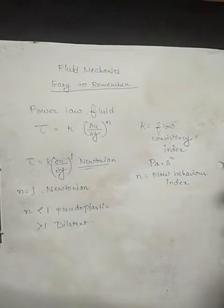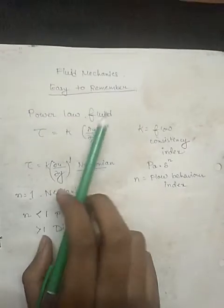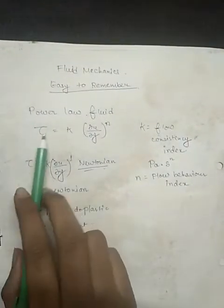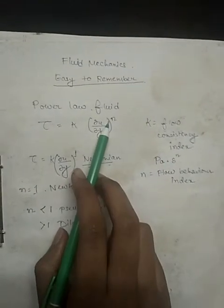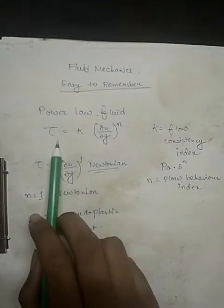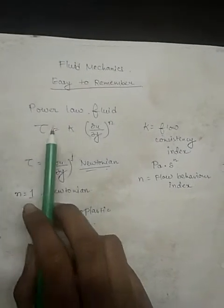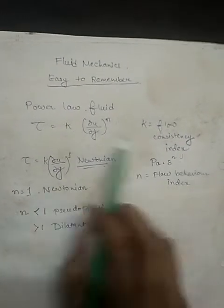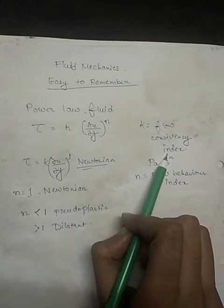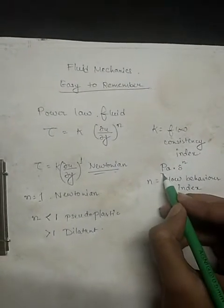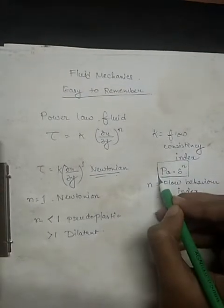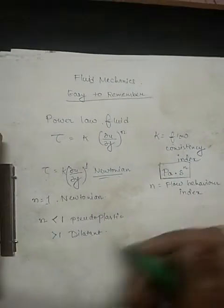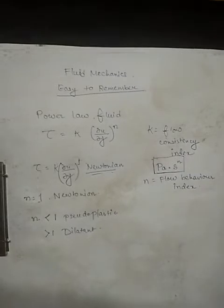Now first of all, what is the power law of fluid equation? It says tau equals to k del u del y to the power n. Now what is tau? Of course you know it is the shear stress, k being the flow consistency index. The unit of this is given by Pascal multiplied by second to the power n, where n is the flow behavior index.